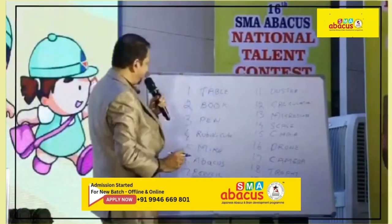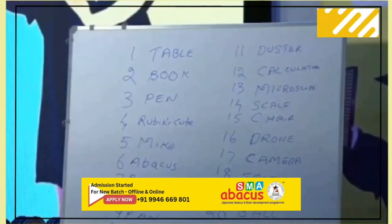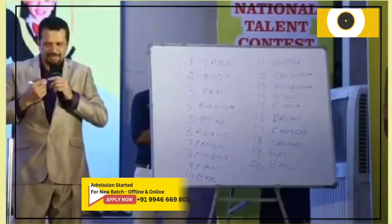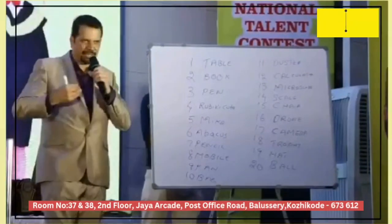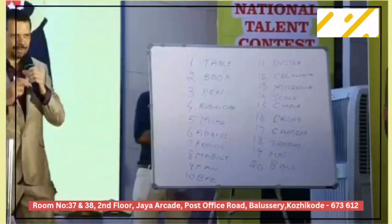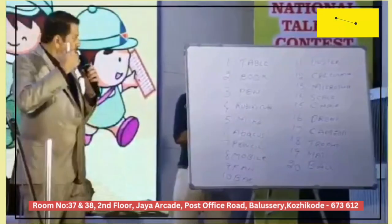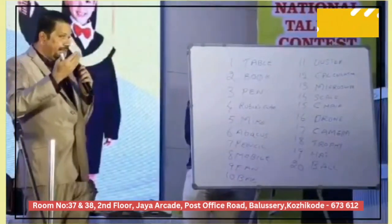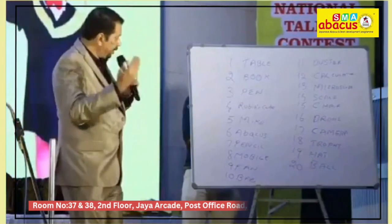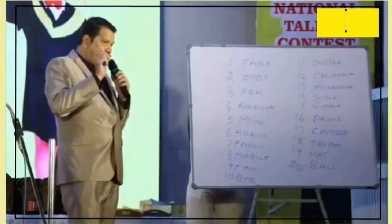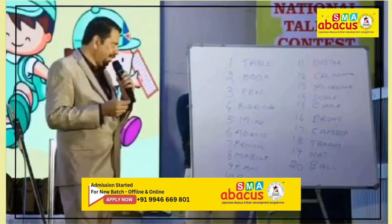We are done with 20 numbers. Thank you so much to the crowd for sharing the objects with us. So we are going to dictate these objects to our kids. They will memorize and recall them in order 1 to 20, then 20 to 1. Then randomly, if you ask which object corresponds to which number and which number corresponds to which object — all four rounds we'll see.